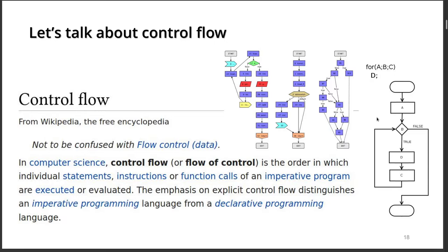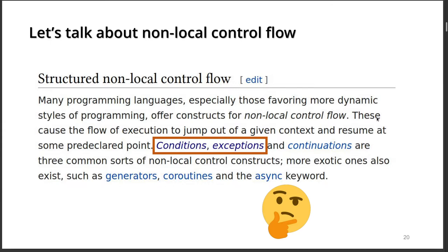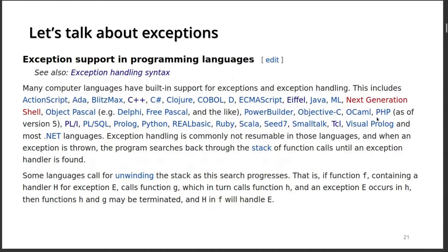Speaking very generally, control flow is the order or ordering in which some instructions or blocks of code or functions are executed, how they are executed, when they are executed, how many times they are executed, and so on. Of particular interest is so-called non-local control flow, which states what should happen not just within a single function call, but whether we should go up or down several functions at once. Conditions, exceptions, and continuations are three common sorts of non-local control constructs. We will focus on the differences between the first two, since they are most on topic with regard to this talk.